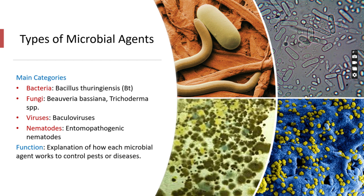There are four main types of microbial agents. First, bacteria — for example, Bacillus thuringiensis (Bt) is widely used. Second, fungi — includes species like Beauveria bassiana and Trichoderma spp.